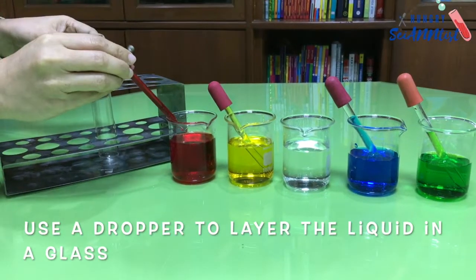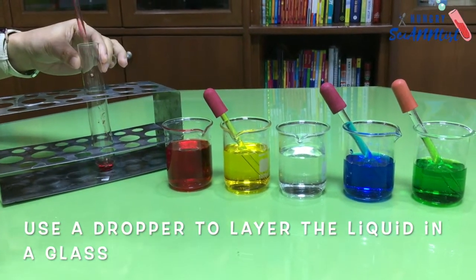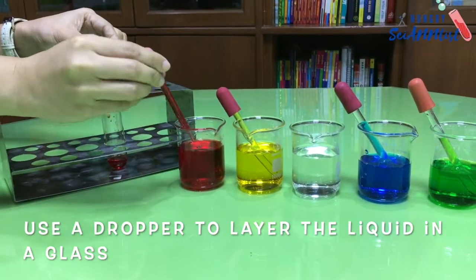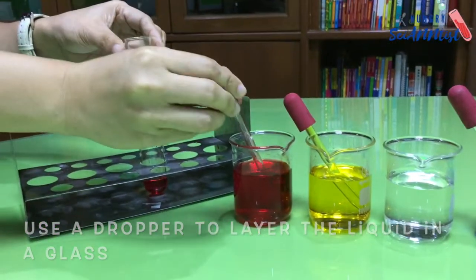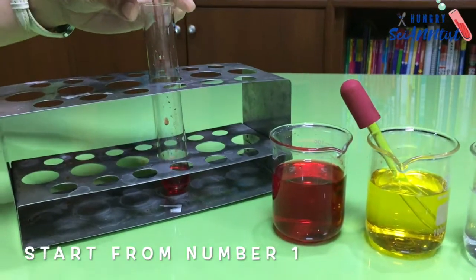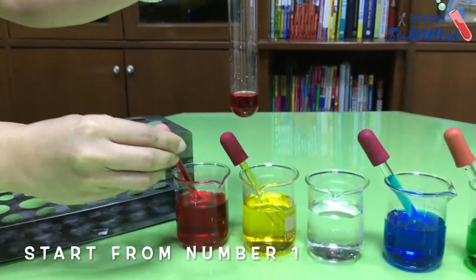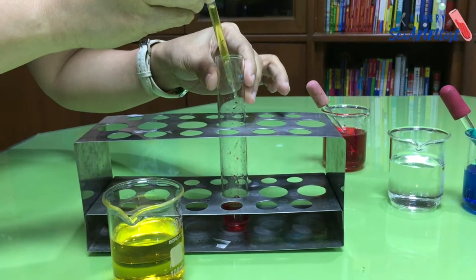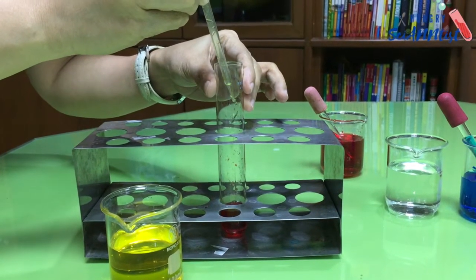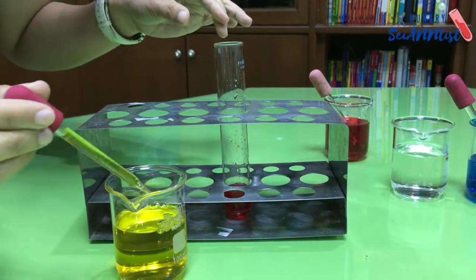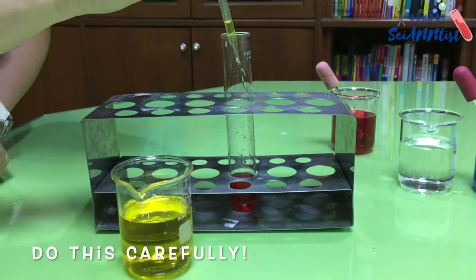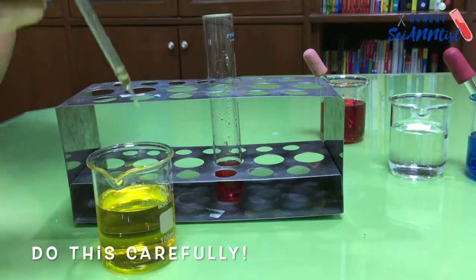For this part, you can layer the liquid in a glass bottle or in a graduated cylinder. I am using a test tube. Make sure that you will start from number 1, then to number 2, 3, 4, and 5. I used 4 field droppers for each color. Do this carefully.